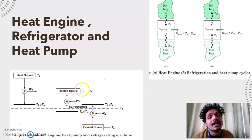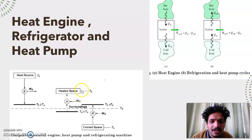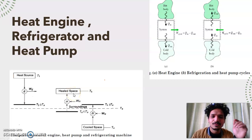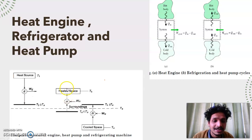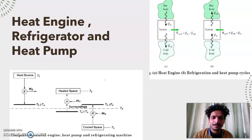In a heat pump, you want to maintain the temperature of a space or body higher than the surrounding temperature. To keep that body at a temperature above the surrounding, you need to continuously supply heat to that space. For example, in winter, if you want to keep your room warm, you keep a heater running. If you don't run the heater, after some time the room temperature will equalize with the surrounding temperature.